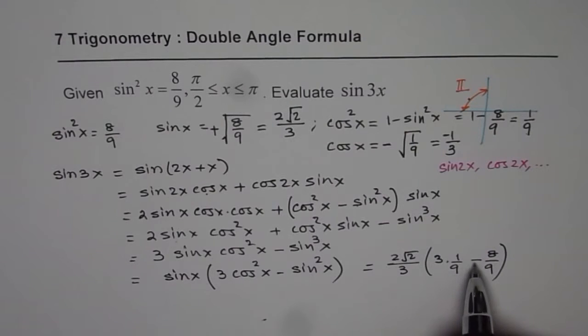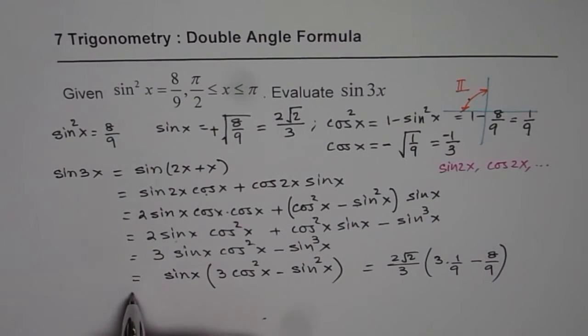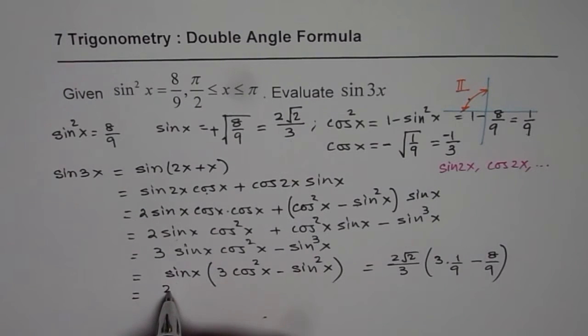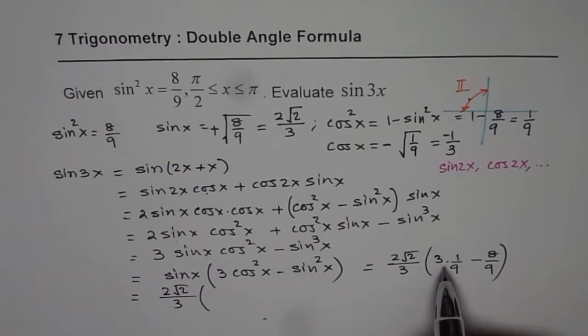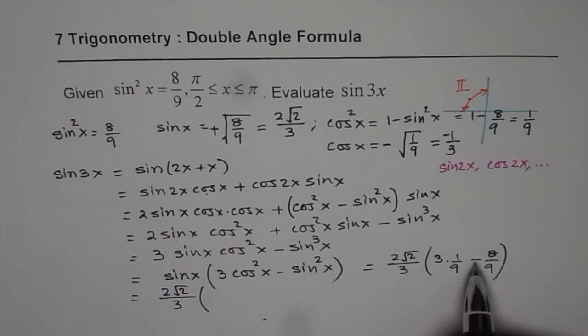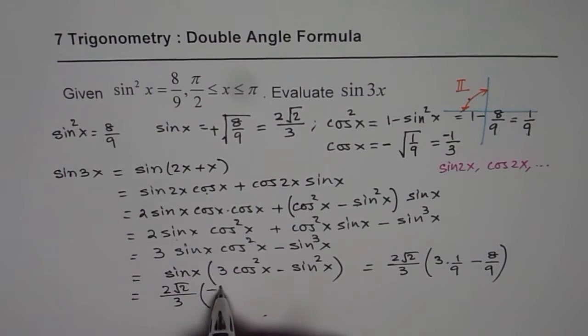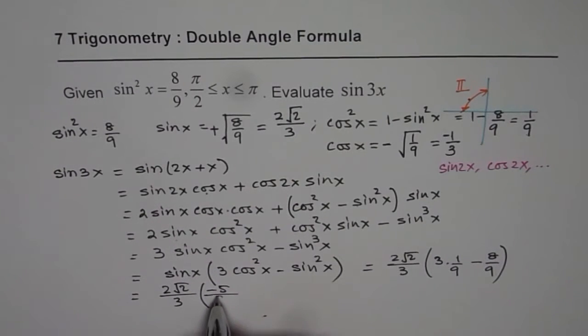Now, we can simplify this. 3 minus 8 is -5. We'll do it here. So we got 2√2/3. And within brackets, we'll not simplify it. 3 - 8 is -5. So we'll write -5/9.